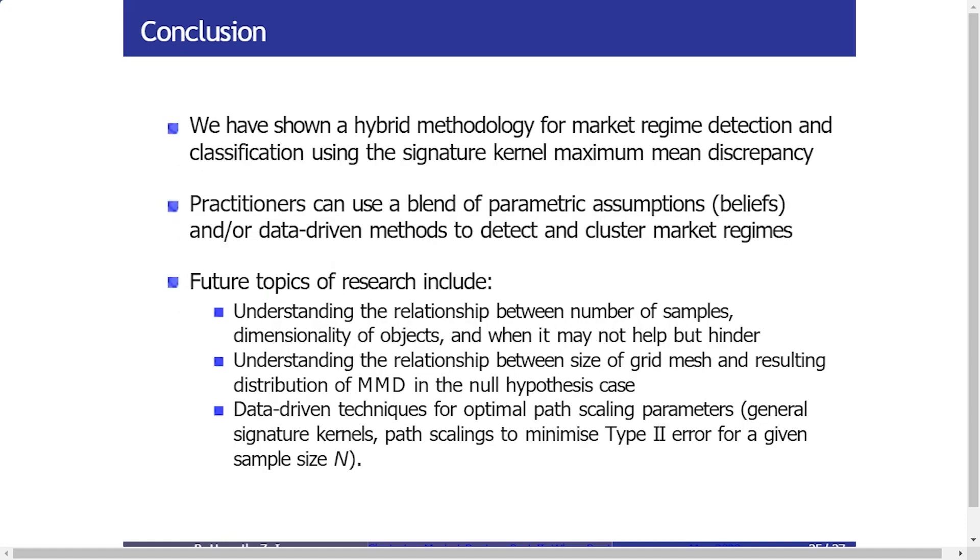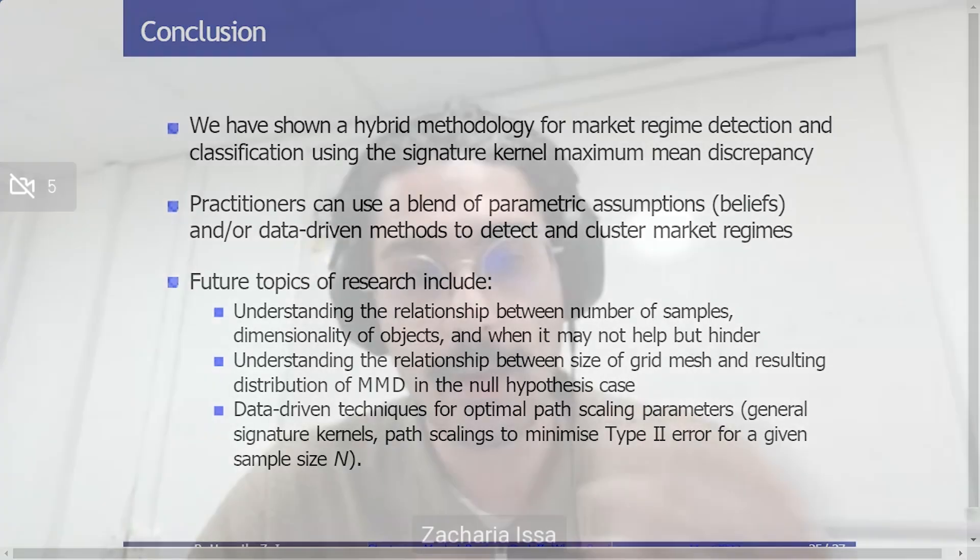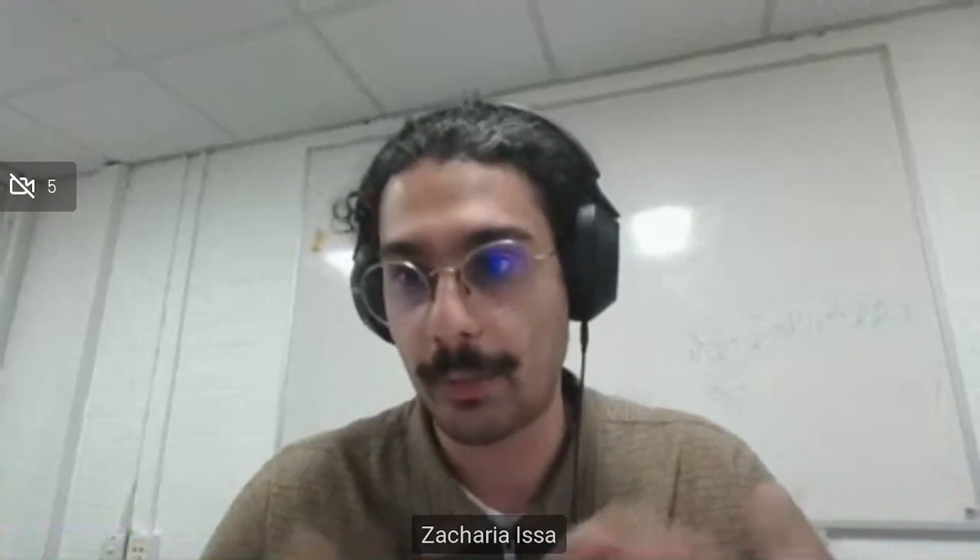Okay, so just wrapping up now, this is just a hybrid methodology that you can use for detection and that you can also use for clustering once you've observed all your data. There are two different ways that you can attack the problem in terms of the detection problem. The first is with beliefs, which you can have—we didn't have time to mention it today, but you can have multi-class beliefs and you can basically track how your MMD score changes according to all of your different beliefs. And that can be a useful way to detect different kinds of regimes.